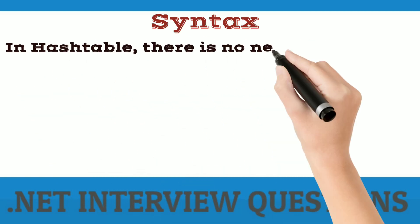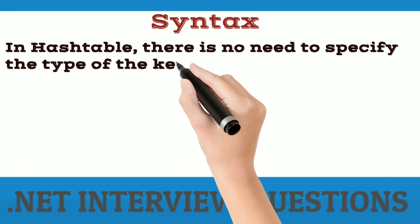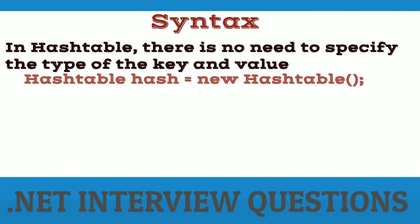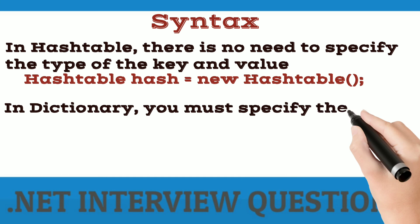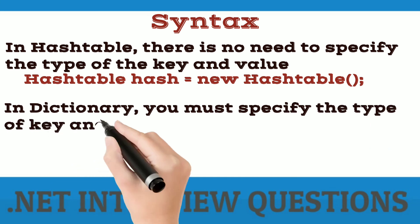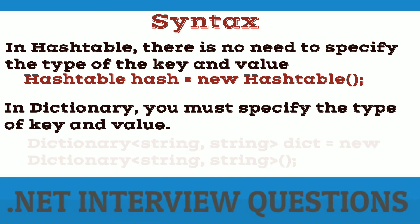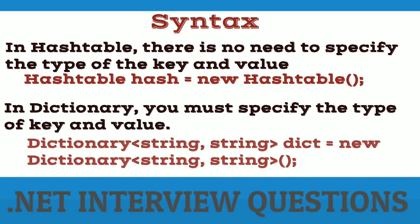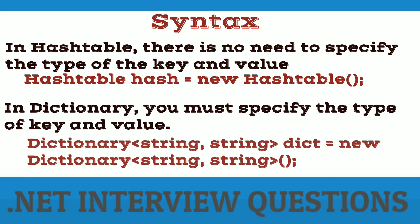In hash table, there is no need to specify the type of the key and value — here is the syntax to declare a hash table. But in dictionary, you must specify the type of key and value — here is the syntax to declare a dictionary. For example, I created a dictionary with both key and value type as string, though you can choose other data types as well.